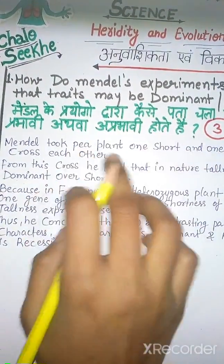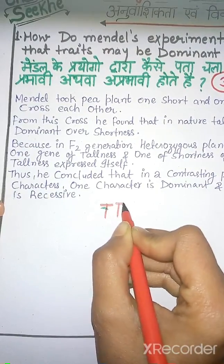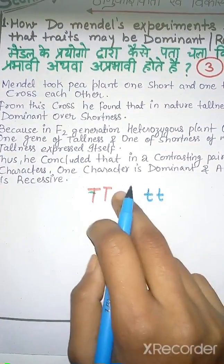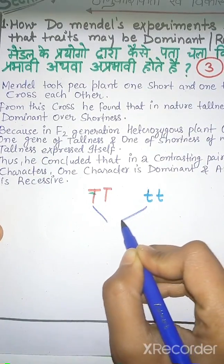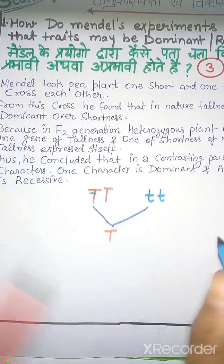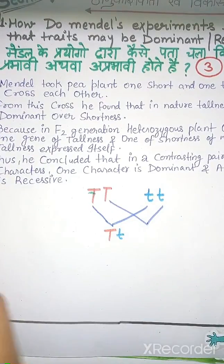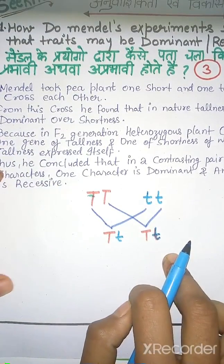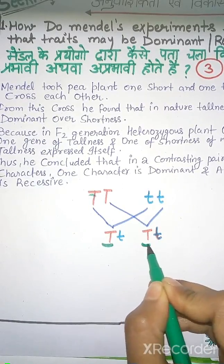Mendel crossed a tall pea plant and a dwarf pea plant. Tall pea plants are represented by capital T, and dwarf plants by small t. After crossing them, the first generation (F1) will have a capital T character and a small t character. Four progenies will be produced, all with the Tt combination.